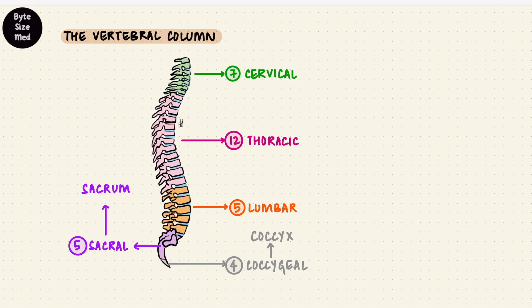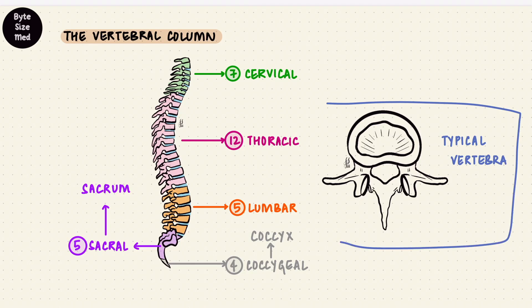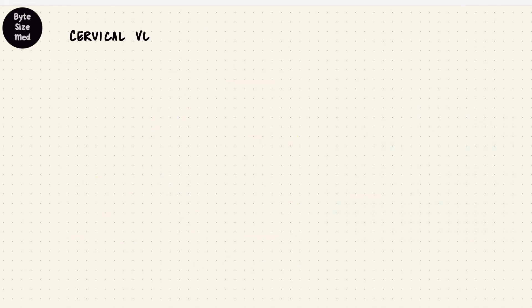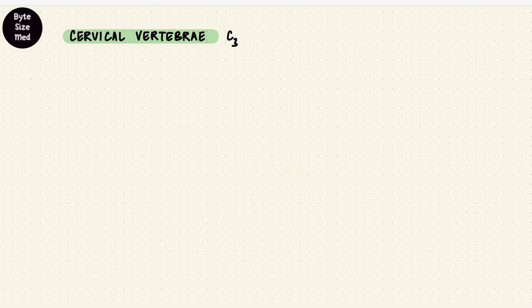In part one we went over the structure of a typical vertebra, the blueprint that these bones follow. Now we're going to look at some of the things that are different at each level. We'll start at the top with the cervical vertebrae. There are seven, C1 to C7. The top two, C1 and C2, are especially special — atlas and axis — and they look very different than any of the other vertebrae, so they'll be covered in another video. The rest, C3 to C7, are more like typical vertebrae and that's what we're going to look at.